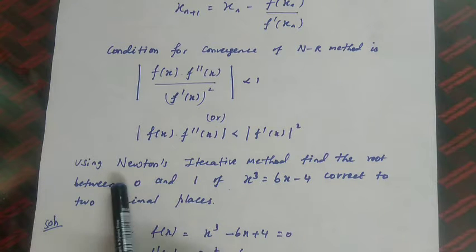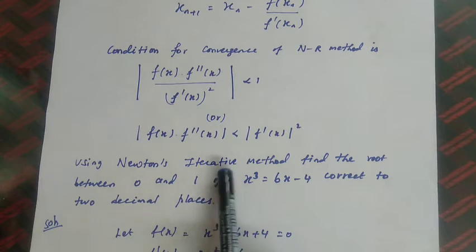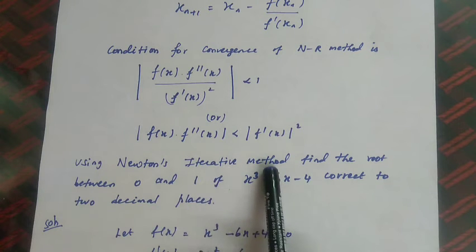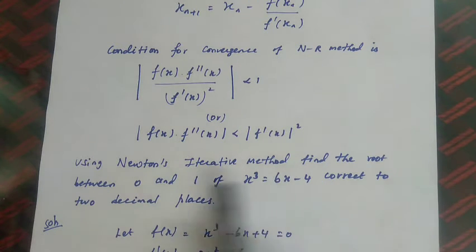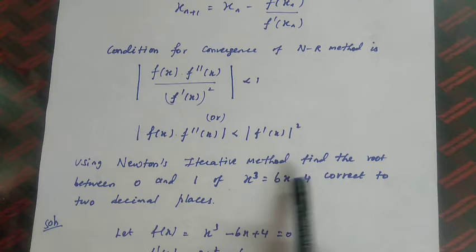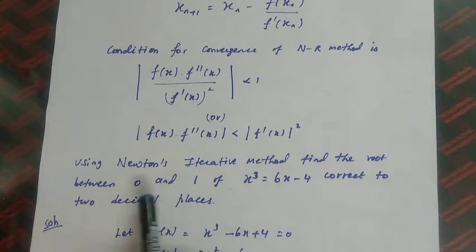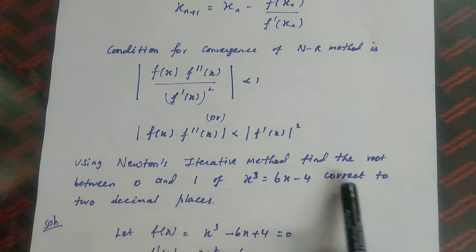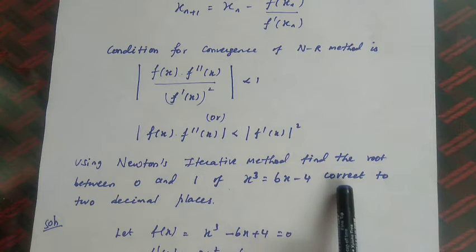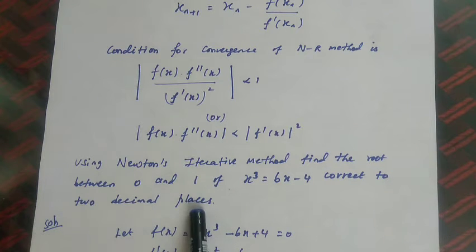Newton-Raphson method is also called Newton's iterative method. We need to find the root between 0 and 1 of the given equation, as stated in the question. The answer must be approximated correct to two decimal places.